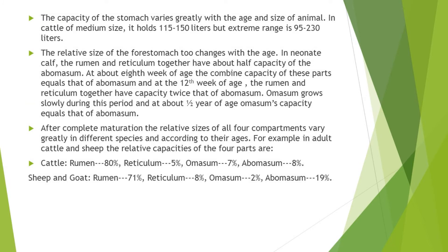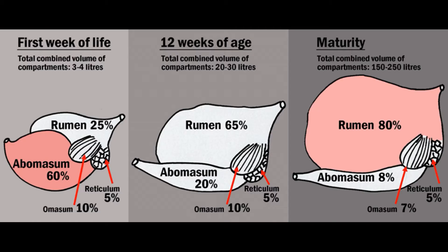The capacity of the whole stomach of ruminants depends upon the age and size of the animal. In medium-sized cattle the capacity of the stomach is 115 to 150 liters, with an extreme range of 95 to 230 liters. The relative sizes of omasum, abomasum, rumen, and reticulum also change with age. In a neonate calf, rumen and reticulum together have about half the capacity of the abomasum. At about eight weeks of age, the combined capacity of rumen and reticulum equals that of the abomasum, and at 12 weeks it is twice that of the abomasum.